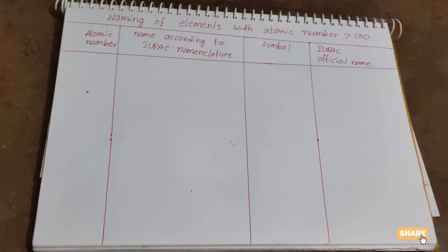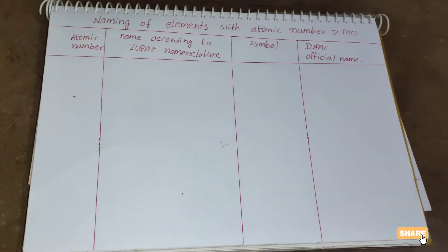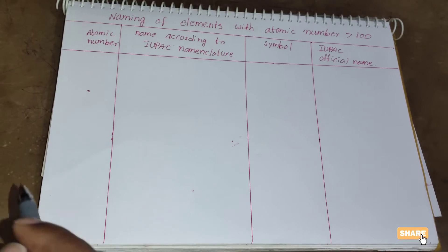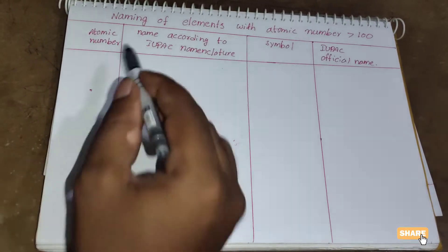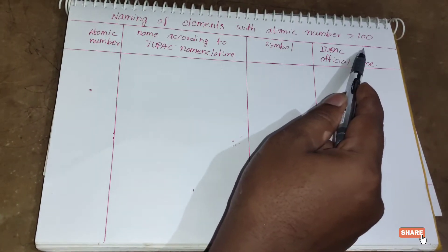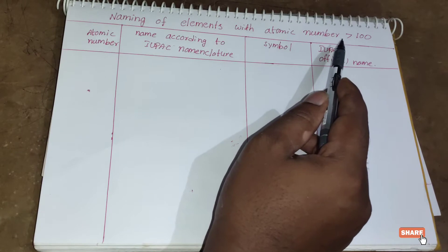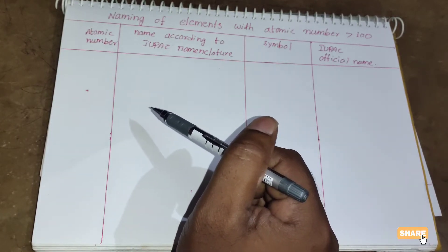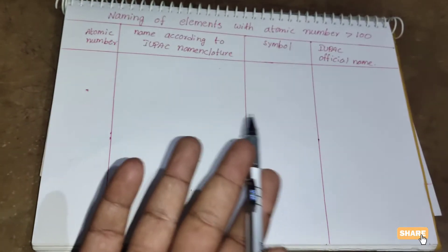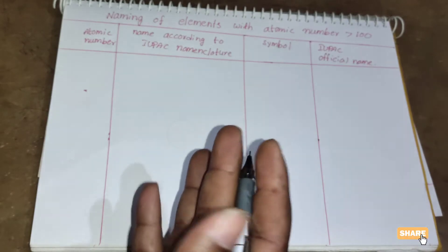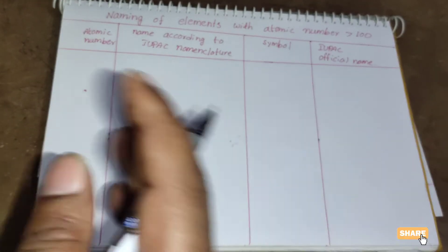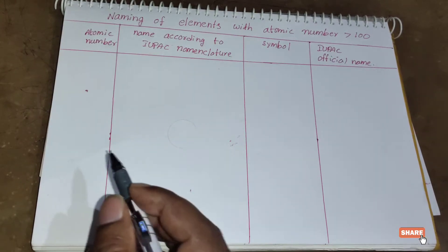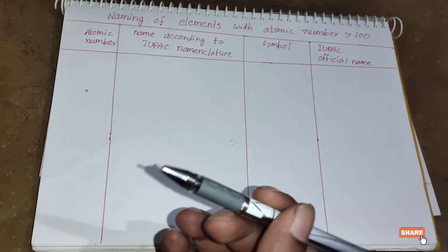Hi students, today we will discuss one of the important concepts: the nomenclature of elements with atomic number 101 or greater than 100. Why are they keeping a different nomenclature for elements with atomic number greater than 100? The naming of a new element had traditionally been the privilege of the discoverer, and the suggested name was ratified by the IUPAC system.